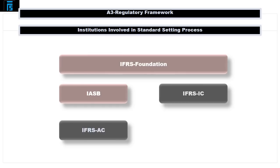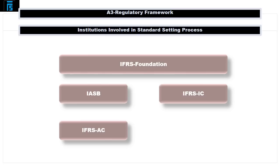Next, we have the IFRS Interpretations Committee, which issues guidance on accounting topics where divergent interpretations of the standards exist, or where there are new issues not specifically dealt with in the standards. However, before any interpretations issued by the IFRS IC become binding, they first need to be approved by the IASB. And finally, we come to the IFRS Advisory Council, whose role is to provide a forum for the IASB to consult a wide spectrum of stakeholders who might be affected by the work of the board.